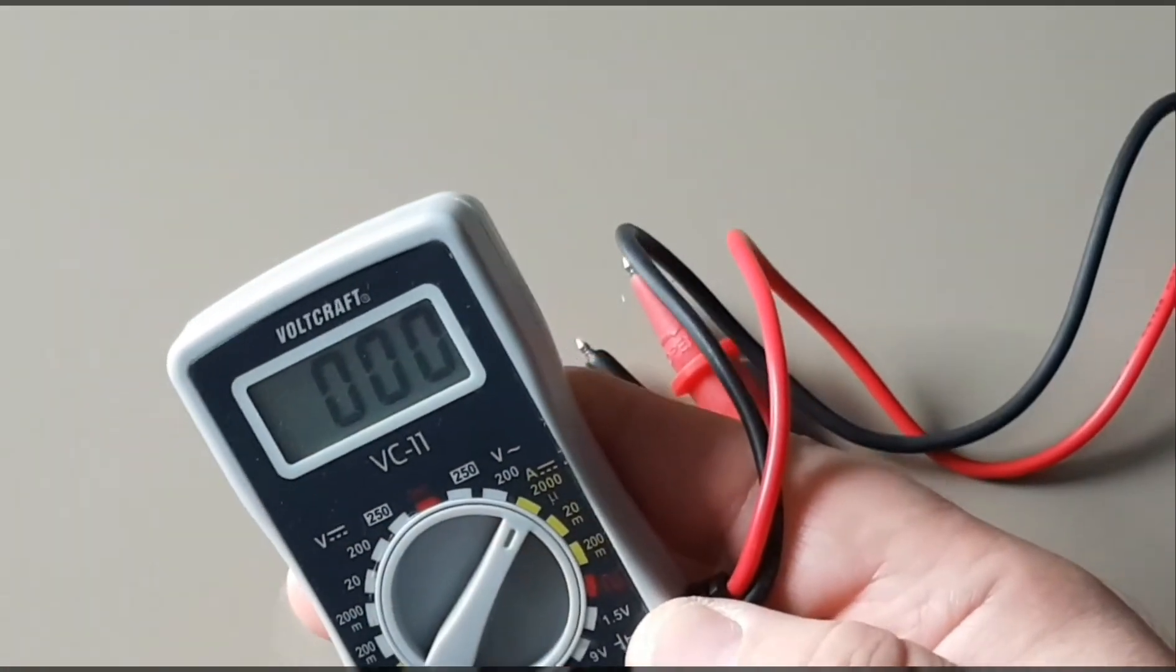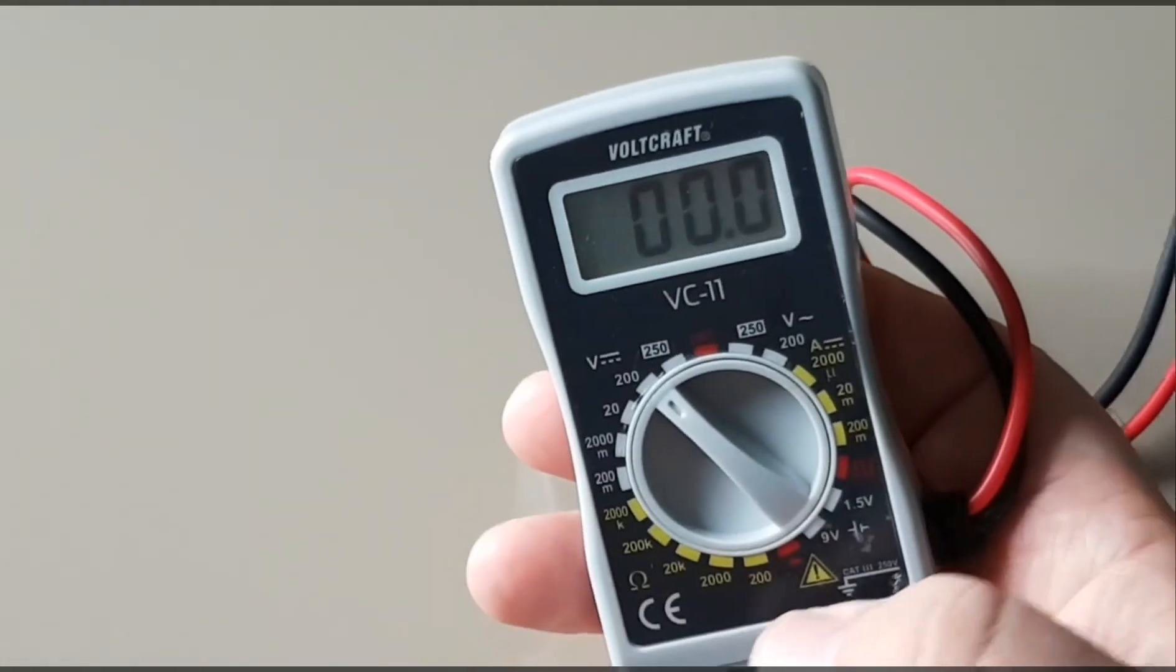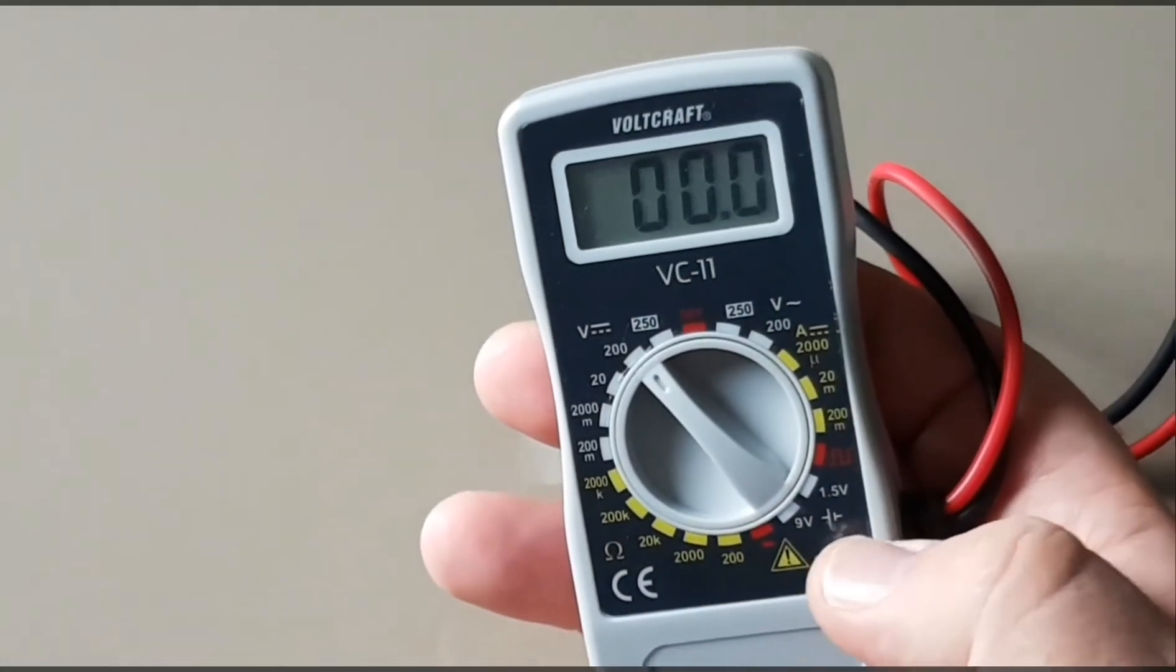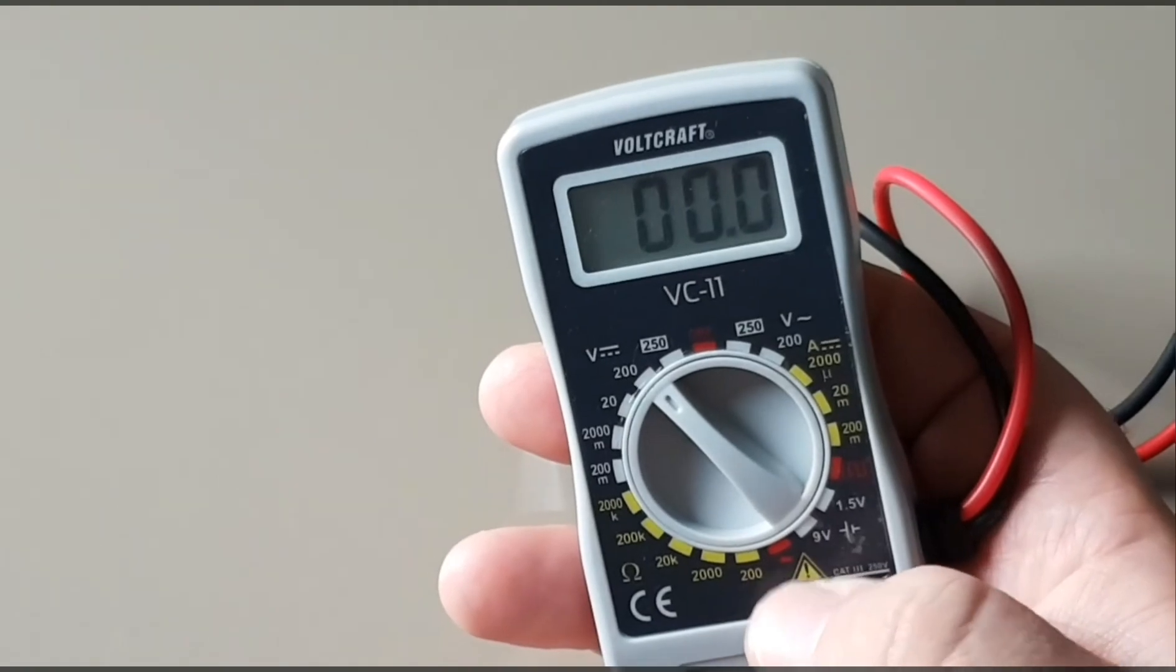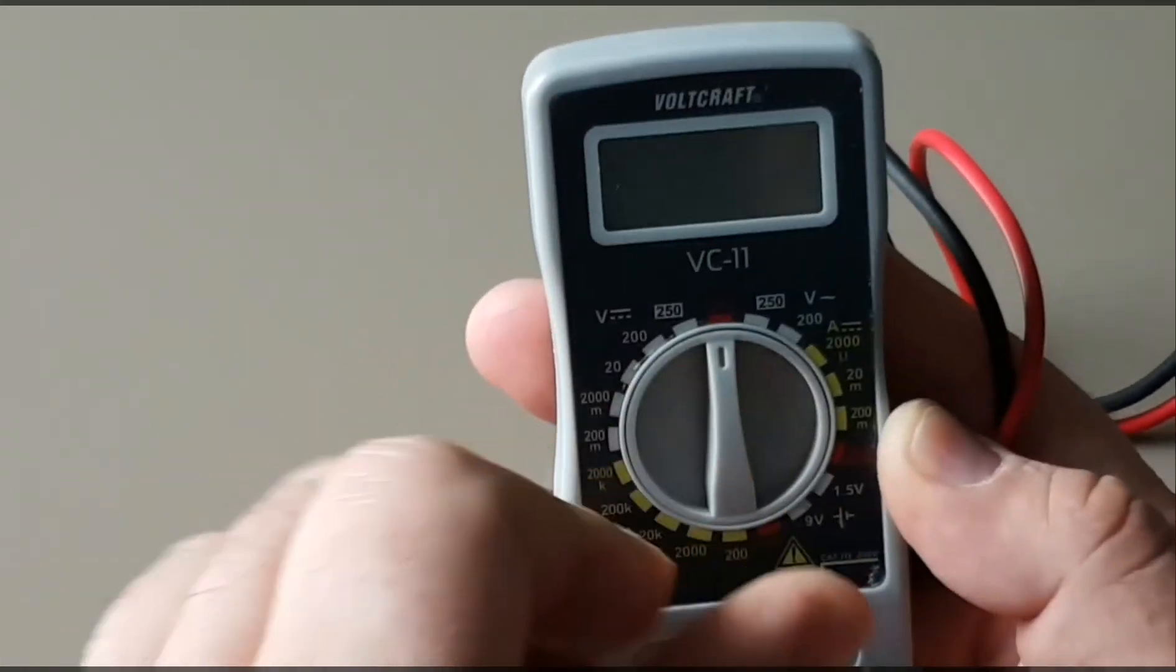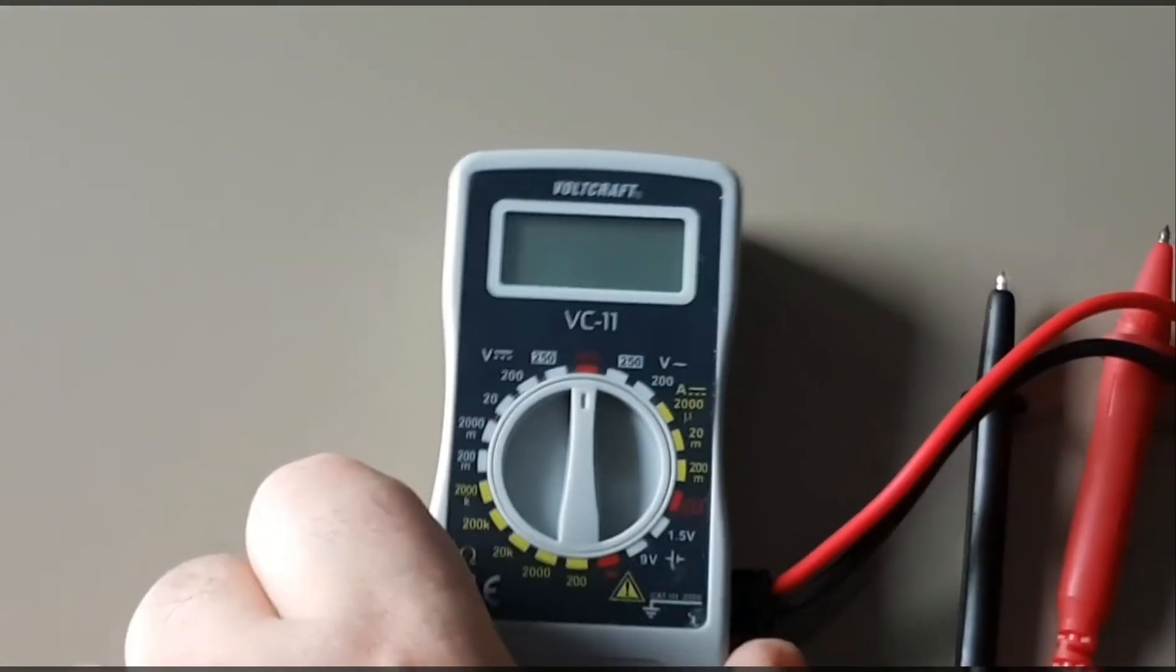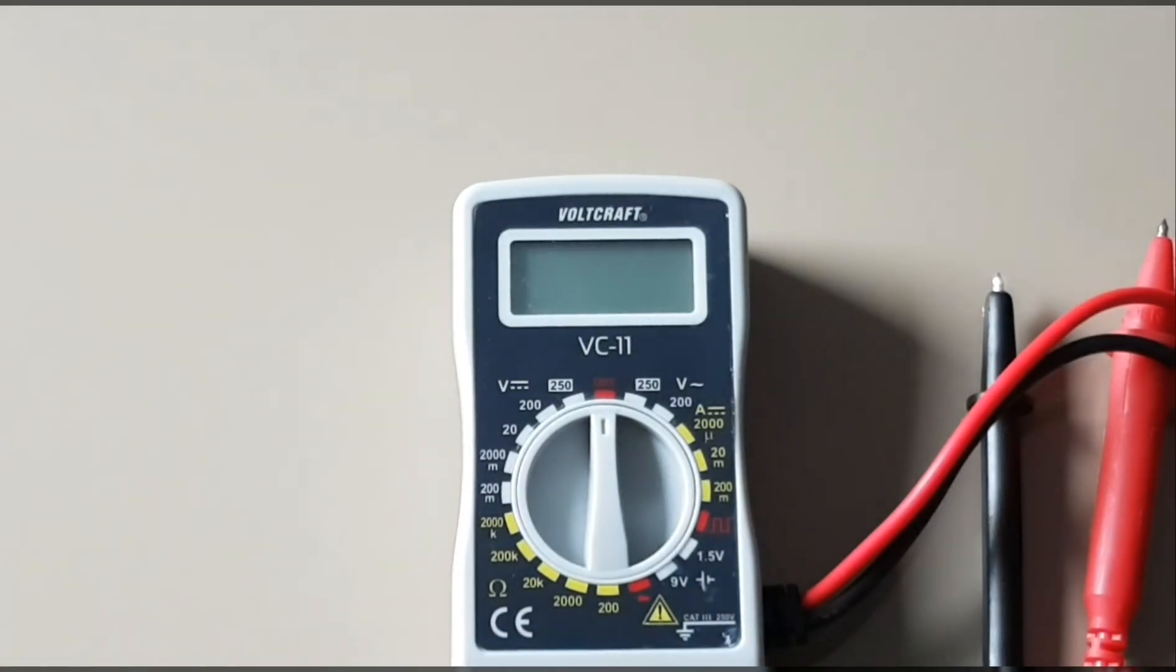It does voltage AC-DC and it does ohms, also known as resistance, and has a separate diode check. So we'll be touching on some of the features and the overall functionality of this little multimeter.